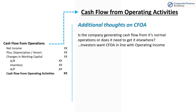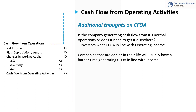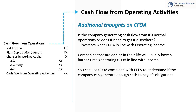A few final thoughts on CFOA: you're trying to see if a company is generating cash flow from its normal operations or if it needs to go get it somewhere else. Investors like to see CFOA in line with operating income — that signifies a high quality of earnings; your sales are converting to cash. Companies early in their life cycle will have a harder time generating CFOA in line with income. You can use CFOA combined with CFFA — operating and financing — to derive whether a company can generate enough cash to pay its obligations.